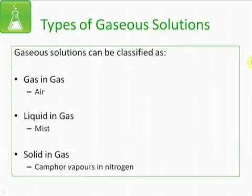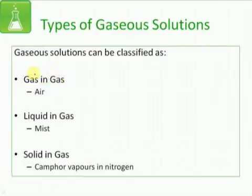The first type of solutions we are going to discuss are the gaseous solutions. In a gaseous solution, the physical state of the solvent is gas, and the solute can be gas, liquid, or solid. The first type of gaseous solutions are the gas-in-gas solutions, where both the solute and the solvent are gas. Its most common example is air, in which nitrogen, present in large proportions, is the solvent, and other gases present in smaller proportions, such as oxygen or carbon dioxide, are the solute.